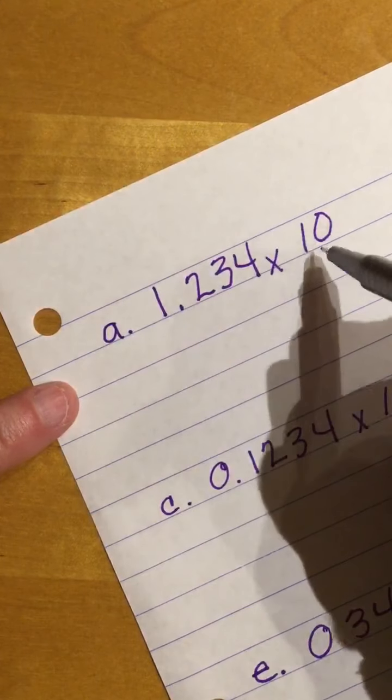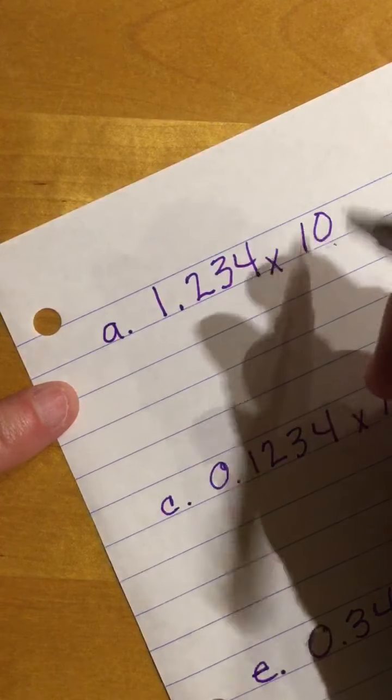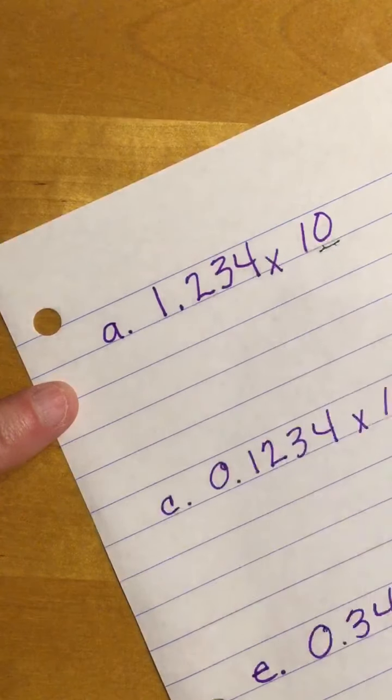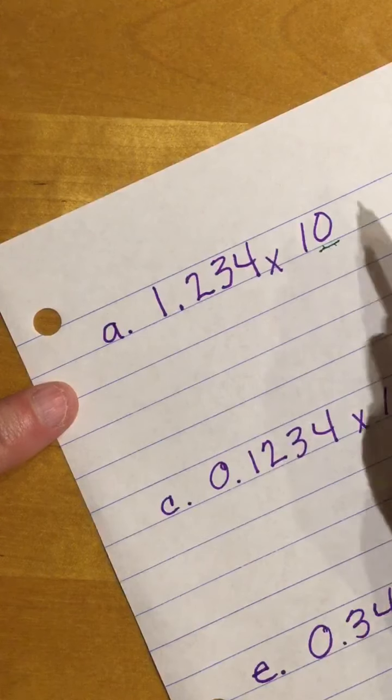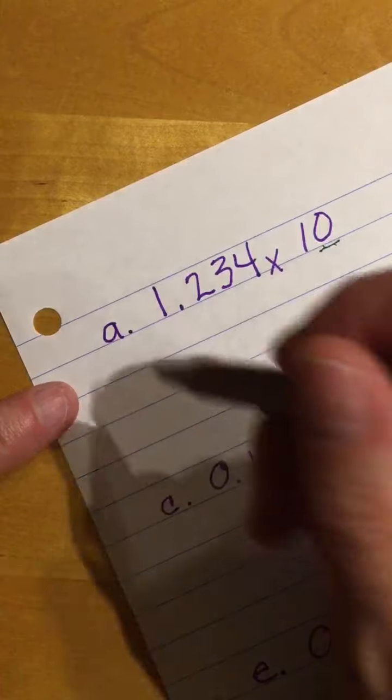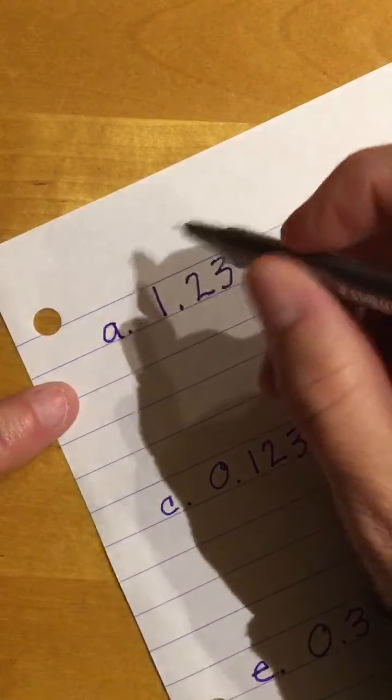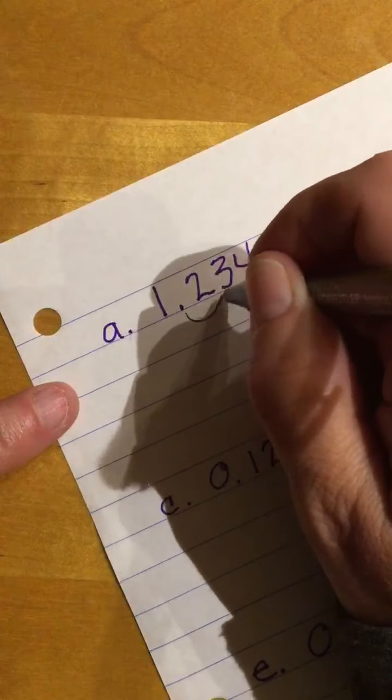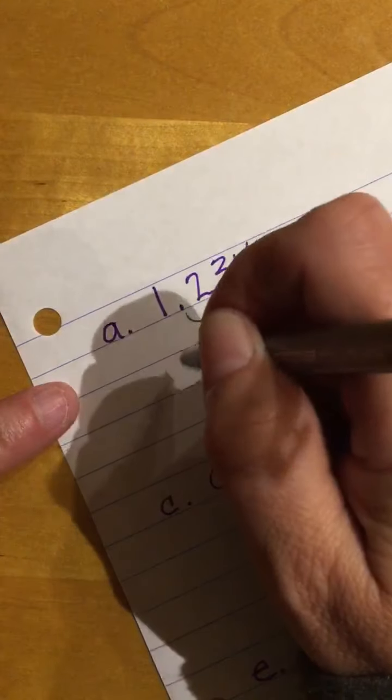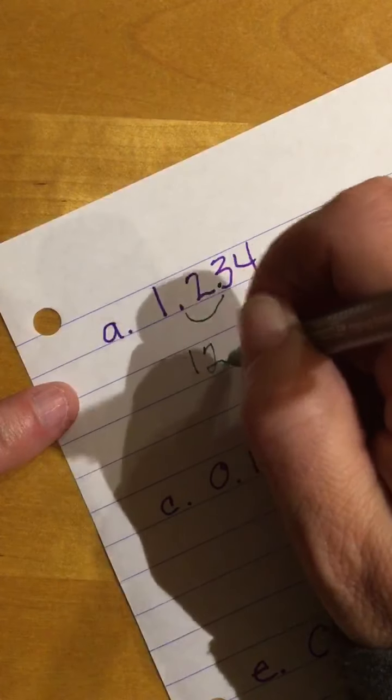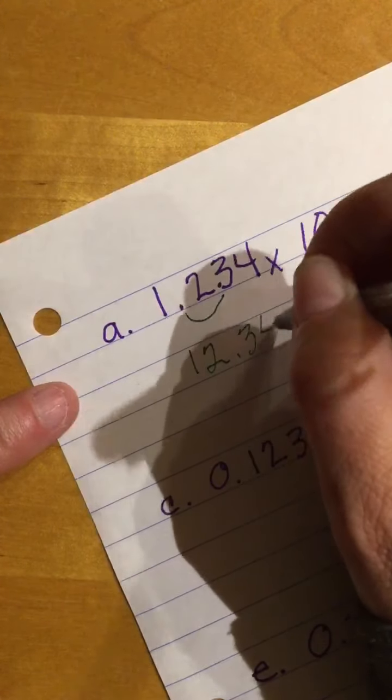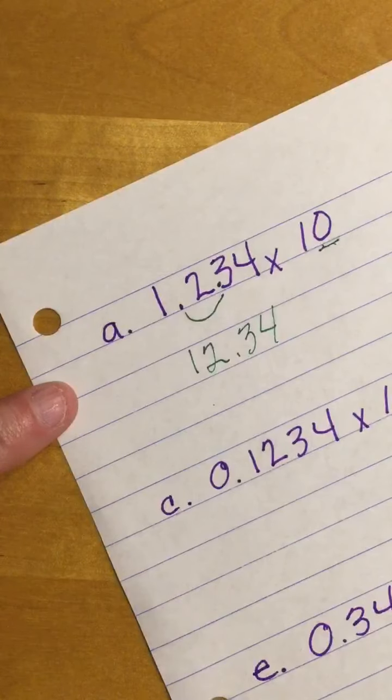On these problems, today, as I look, the first thing I am going to look at is how many 0s I have here. I have one 0. That means my decimal point is going to shift one place to the right. So I am going to end up with 12 and 34 hundredths.